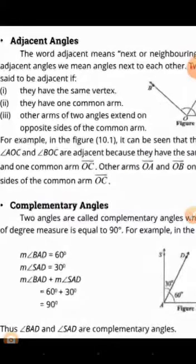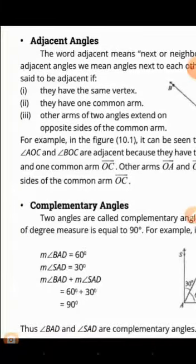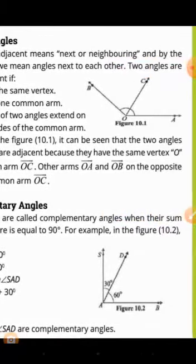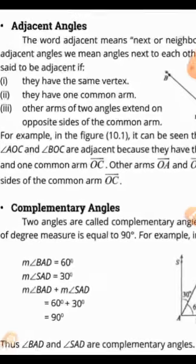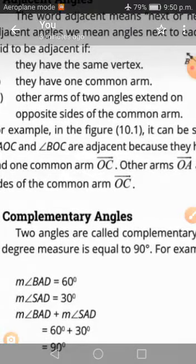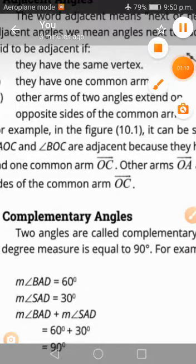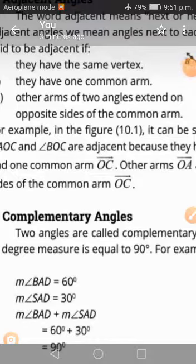The word 'adjacent' means next or neighboring. By adjacent angles we mean angles next to each other. Two angles are said to be adjacent if they have the same vertex, and the other arms of the two angles extend on opposite sides of the common arm.